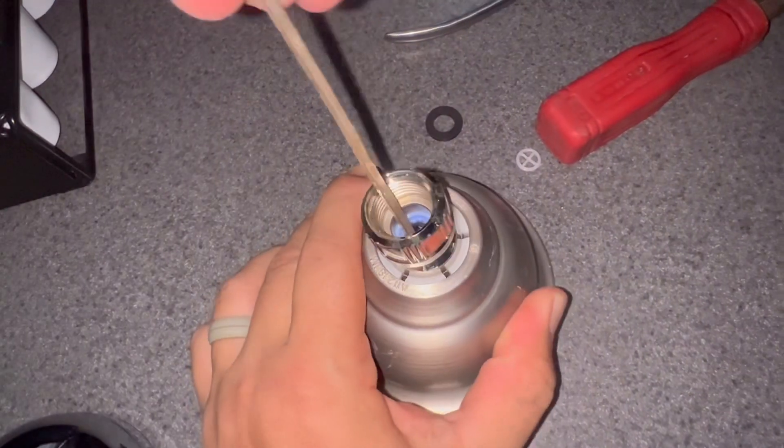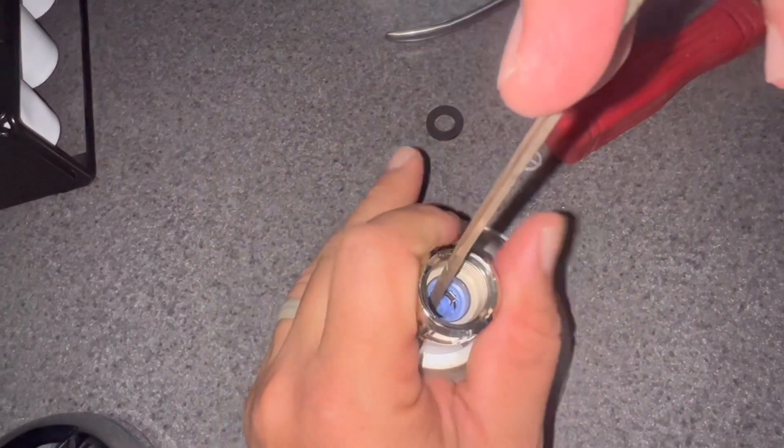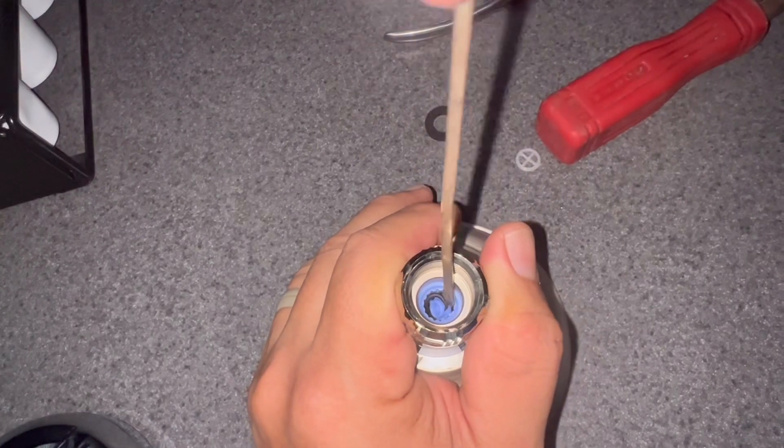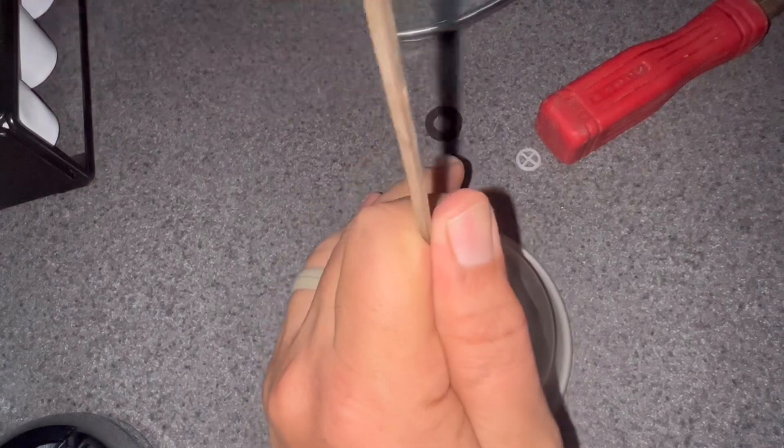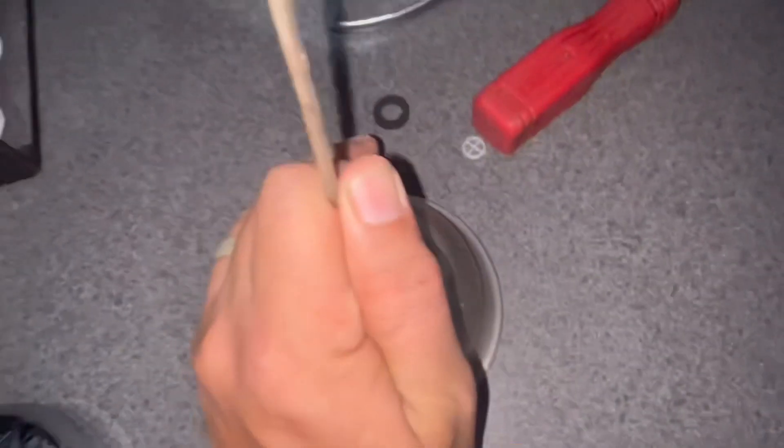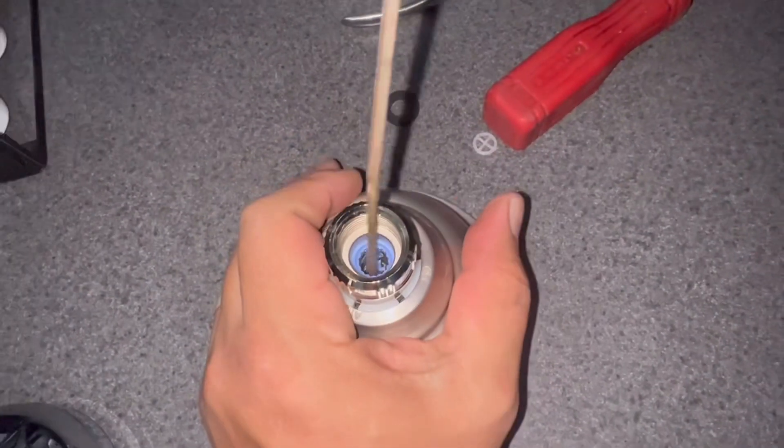I'm using a skinny screwdriver and actually another screwdriver like a hammer to actually break the restrictor out. As you can see I'm just breaking it free right now. I'm gonna have to hit it again. I accidentally hit the camera there.